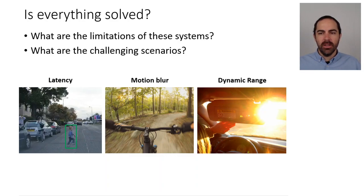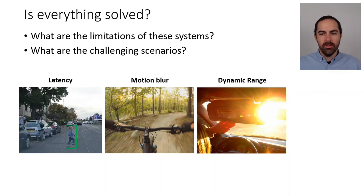Another challenge is dynamic range. I'm sure you've all experienced driving against the sun, or being inside a tunnel where it's very dark while outside is very bright — a very high difference in illumination conditions between two regions in the image. These are all challenging scenarios. To address them, we'll take inspiration from nature and use a different type of sensor called an event camera or event-based camera. These sensors do not suffer from these problems.